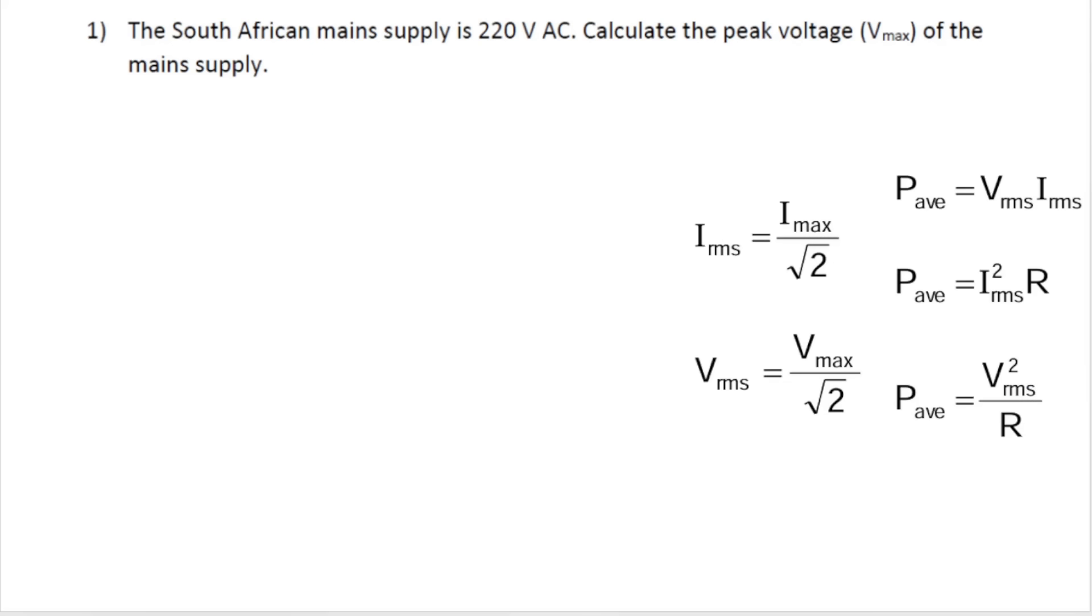So I've got the South African mains supply 220 volts. Now, remember what I mentioned earlier, what the mains supply to our house, the stuff that comes to our house, it's not a maximum, it's a V RMS. Yes, it's more like the useful average. AC, alternating current. They want me to now calculate the peak voltage V max. They're either going to call it peak voltage or they're going to call it maximum voltage or V max. So this formula, of course, makes the most sense.